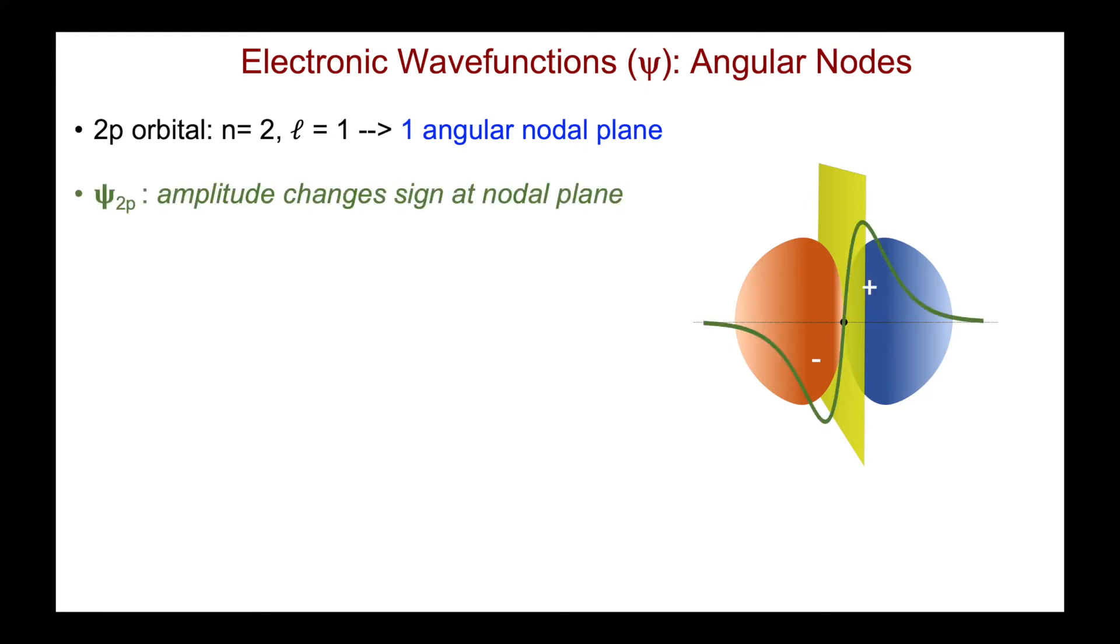Here is a plot in green of the wave function for the 2p orbital. We can see, first, across the nodal plane, there's a change in the sign of the wave function. Here we have a positive amplitude. The nodal plane passes through the nucleus, such that on the other side, that amplitude changes to a negative sign.